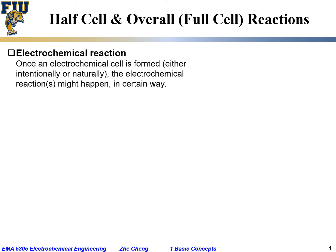After introducing the concept of electrochemical cell, we will now talk about so-called half-cell reactions and the overall or full-cell reactions for a given electrochemical cell. An electrochemical cell is formed or constructed either intentionally or naturally, just like for corrosion of metals, or intentionally like when you make a battery out of copper and zinc and the corresponding salts.